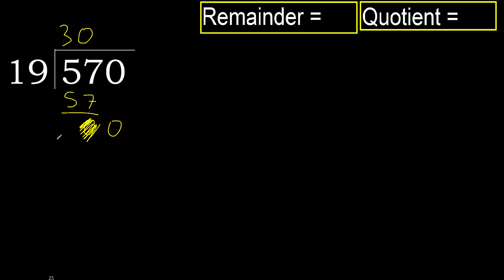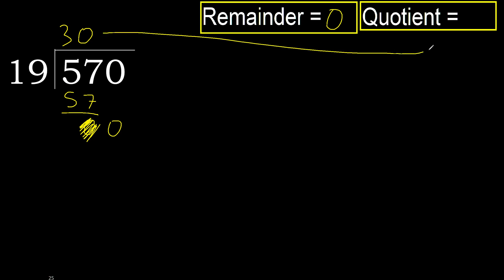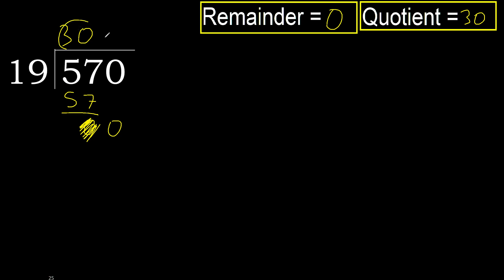Ok. 570 divided by 19 is here — the answer is 30.